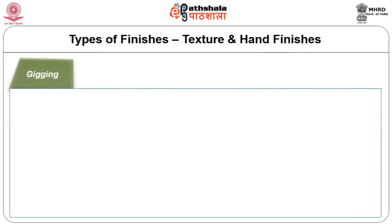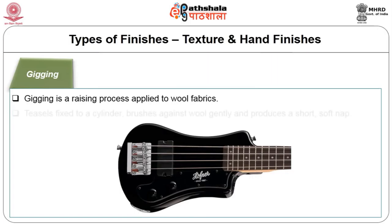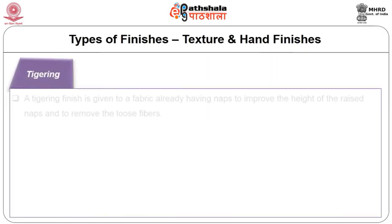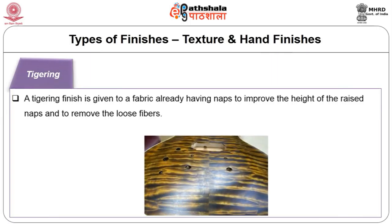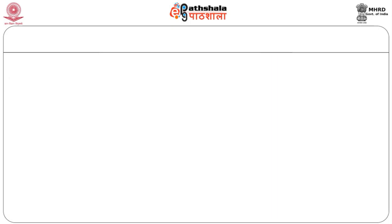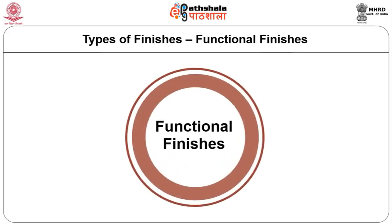Jigging is a raising process applied to wool fabrics — teasels fixed to cylinder brushes against wool gently produce a short soft nap. Tigering finish is given to fabric already having naps to improve the height of raised naps and remove loose fibers; the tiger roll has long fine wires that pull up fibers not raised by napping.